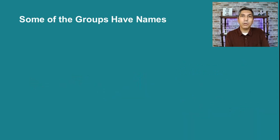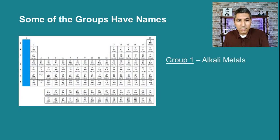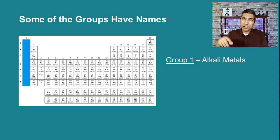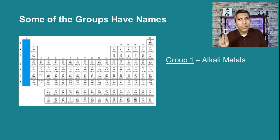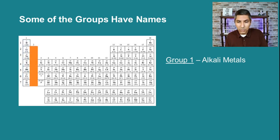There are lots of other groups that are similar to each other, and many of these groups have names. Group number one is called the alkali metals, and they are very interesting because all of those elements tend to react very violently with water. Lithium dropped into water will fizz around and give off hydrogen gas, but as you go down the group that reactivity gets more intense — sodium explodes, potassium explodes even more quickly, and cesium explodes very violently.